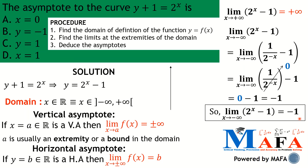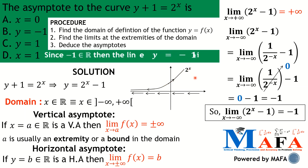We can also verify this graphically. On the xy-plane, the function two raised to the power x is an exponential function that is always increasing. As x turns to minus infinity — going from right to left — the function decreases towards zero. As x turns to plus infinity — going to the right — the function increases towards plus infinity. This confirms that the limit as x tends to minus infinity of two to the power x is zero.